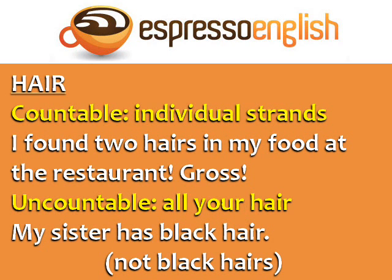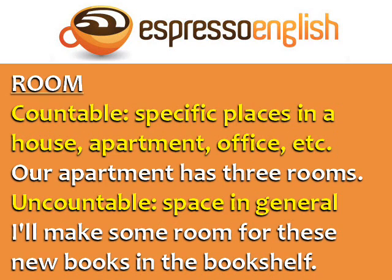'I'm very busy and I have little free time.' 'Hair' is countable when talking about individual strands of hair: 'I found two hairs in my food at the restaurant — gross!' It's uncountable when talking about all your hair: 'My sister has black hair,' not 'black hairs.' 'Room' is countable when talking about specific places in a house, apartment, or office: 'Our apartment has three rooms.'